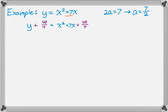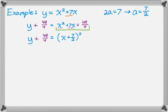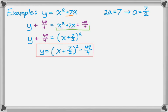Now it's just a matter of factoring. That's a perfect square trinomial — that's the whole point of completing the square. The square root of x squared is x, and half of 7 is 7 halves, so we get the quantity x plus 7 halves squared. Solving for y, we get y equals the quantity x plus 7 halves squared, minus 49 over 4.